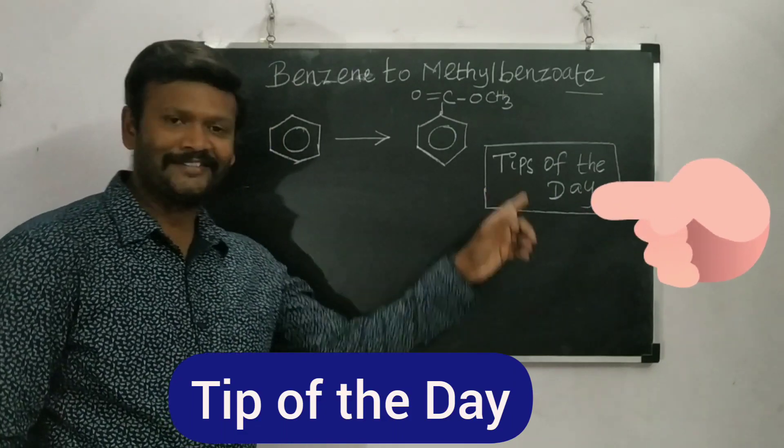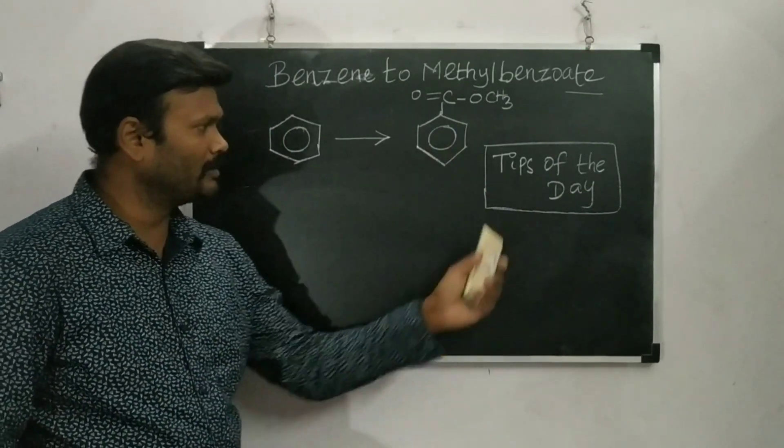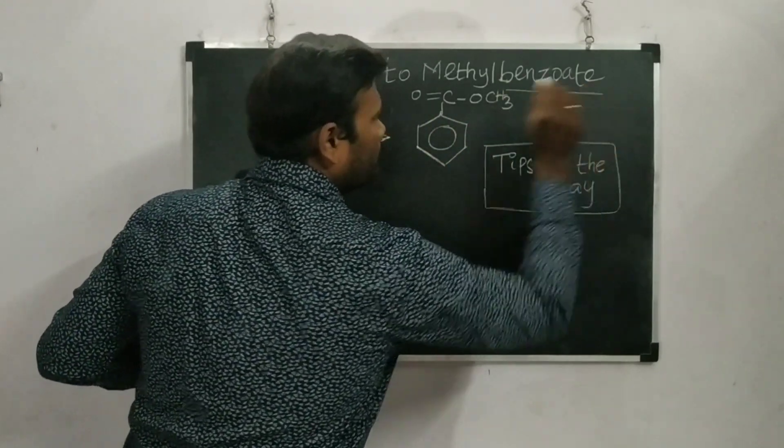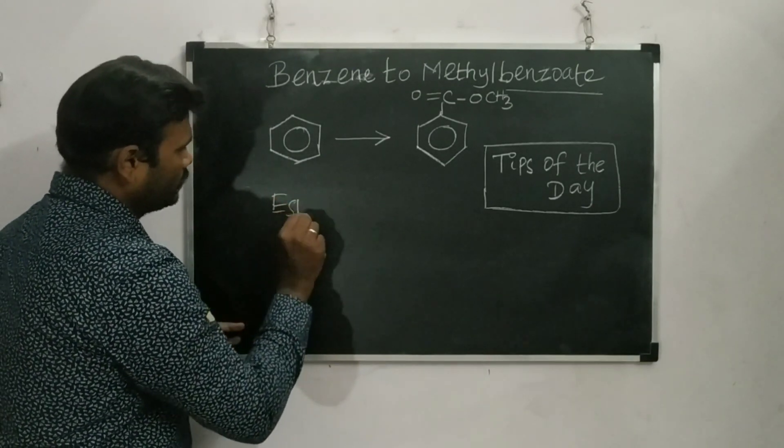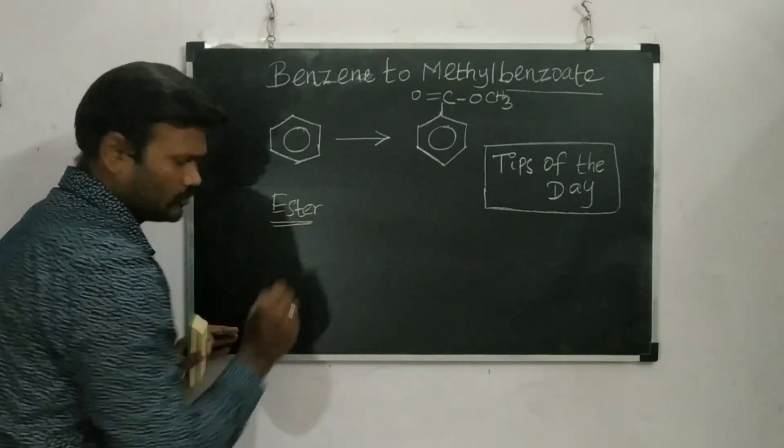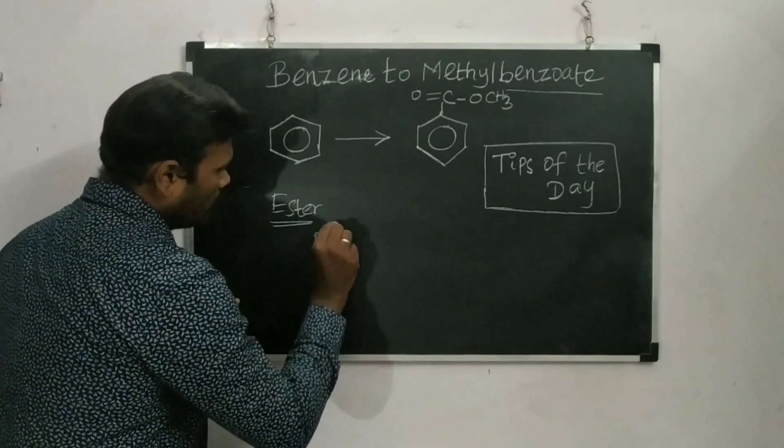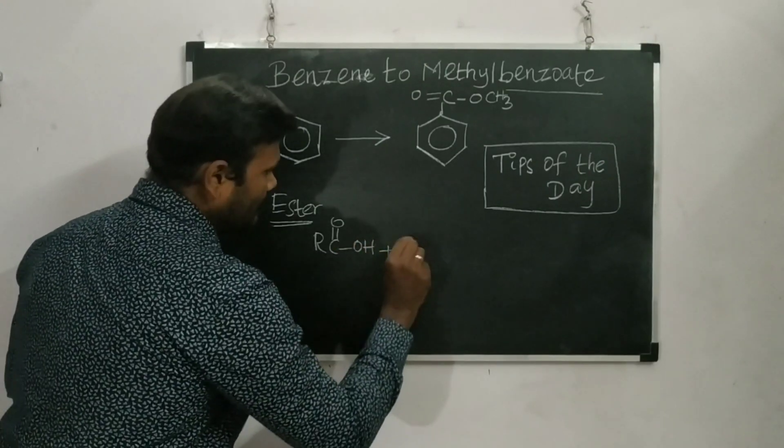Welcome to the tip of the day session. For this particular conversion, what is the product they ask? Benzoate they ask. They are asking for ester. What do you mean by ester? Ester is the reaction of carboxylic acid and alcohol.